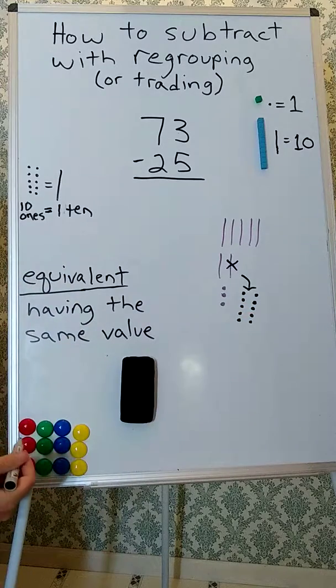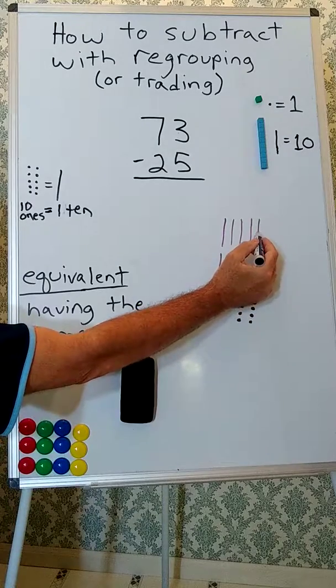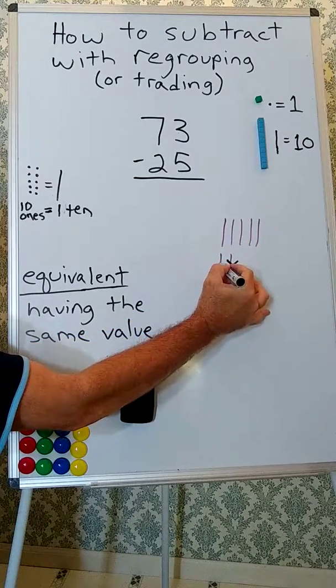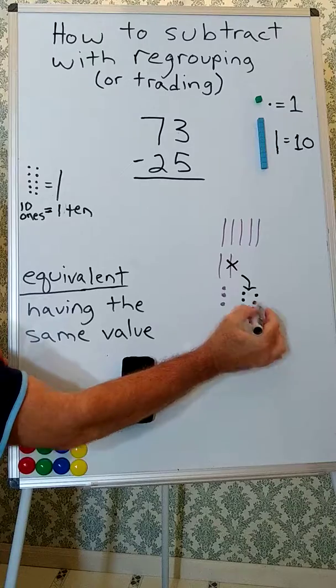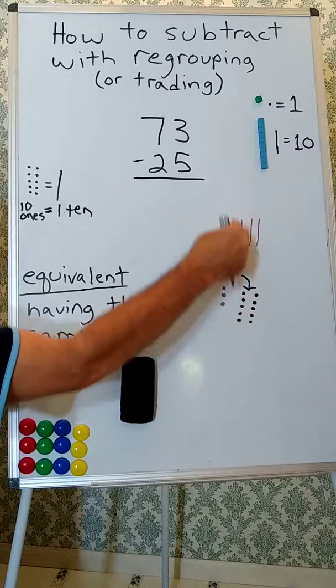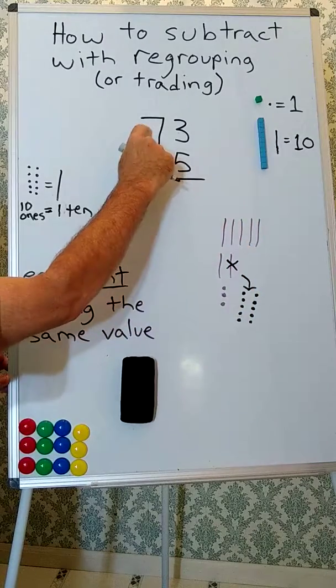Are we still doing the same problem? Well, this is 50, 60, 70, 3. So this is equivalent to what we started with.